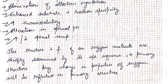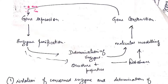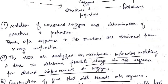Now let's have a look at the flowchart of how enzyme engineering takes place. The very first step is the isolation of the concerned enzyme and the determination of its structure and properties. Both amino acid sequence and 3D structure are obtained from X-ray diffraction. Now the data is analyzed on a database; molecular modeling is done to determine the possible changes in amino acid sequence for desired improvement.